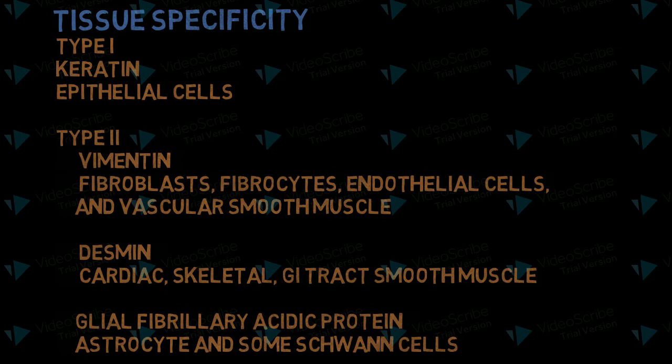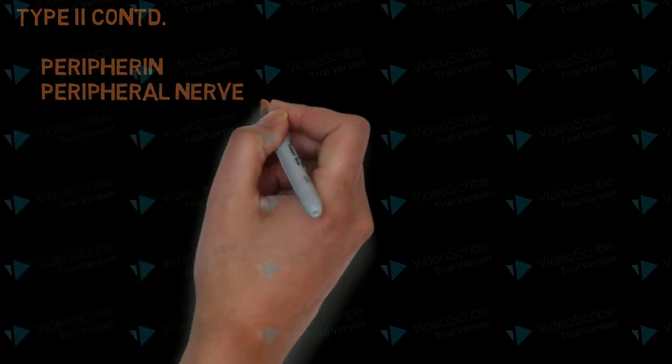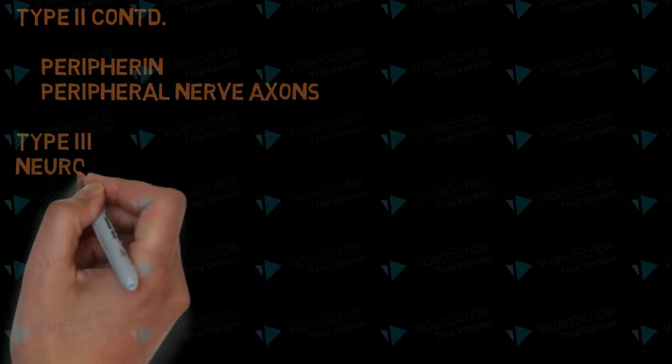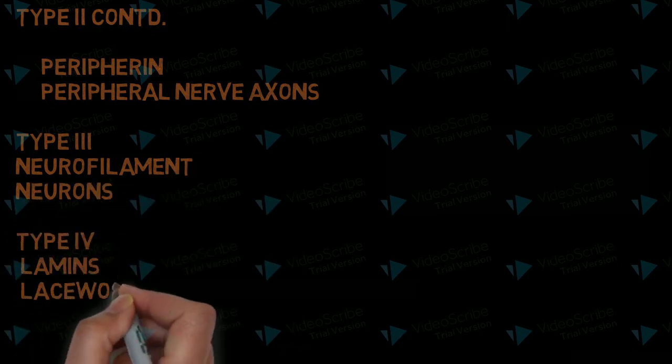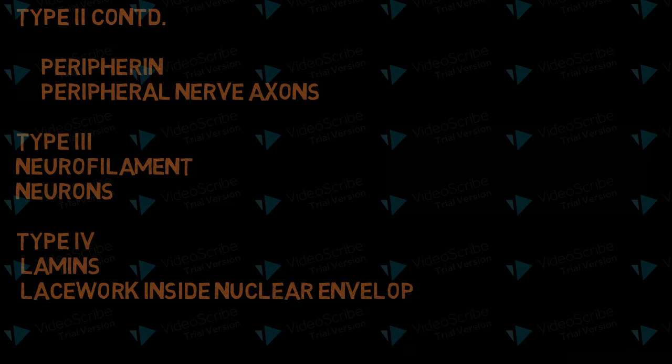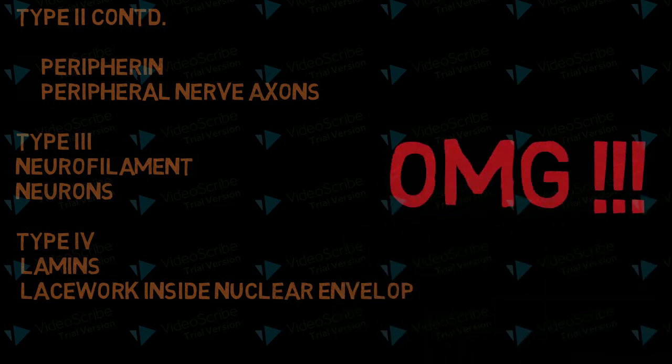Desmin present in cardiac, skeletal, and GI tract smooth muscle. Glial fibrillary acidic protein presents in astrocytes and some Schwann cells. Peripherin present in peripheral nerve axons. Type 3 is neurofilament, present in neurons. And type 4 is lamins, which form mesh work as nuclear envelope.